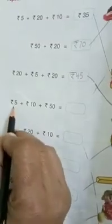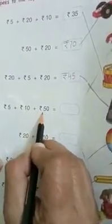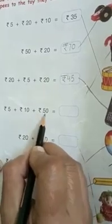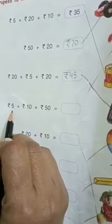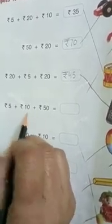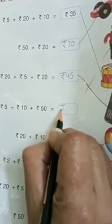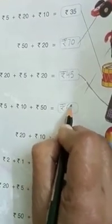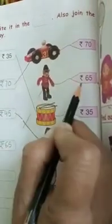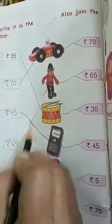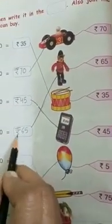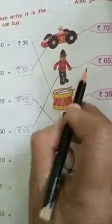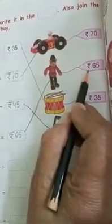Now next — rupees 5 plus rupees 10 plus rupees 50. 50 plus 10 is 60, and 60 plus 5 is 65. Rupees 65. Now look here — the cost of this toy is rupees 65, so we will match it with this toy. The cost of this toy is also rupees 65.